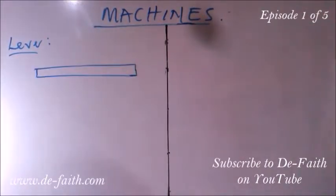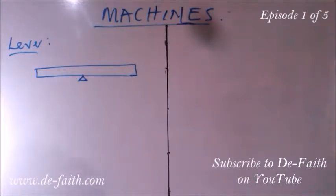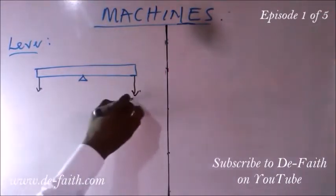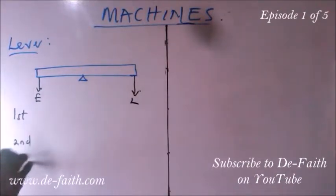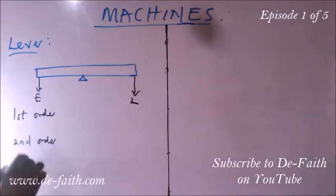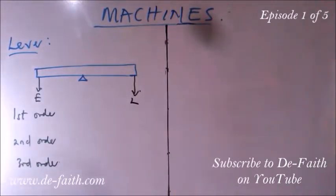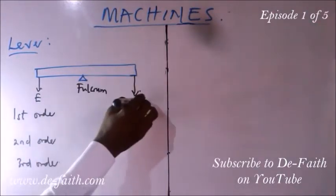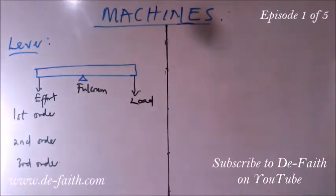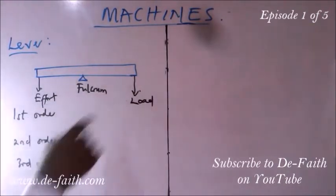When we talk about the lever, it is represented with a bar and has a point of pivot for the load and effort. When a load is attached, there is an effort to balance it. We have three orders of lever: first order, second order, and third order. The order refers to the arrangement of the effort, the fulcrum, and the load — there are several arrangements of these three.